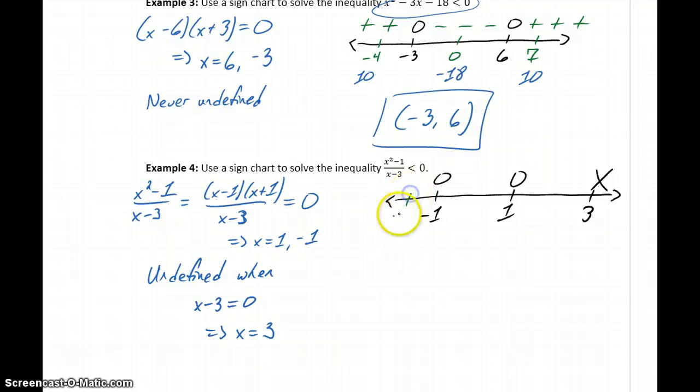So we could, again, choose some test points as long as there are any values in between those intervals. If we plug negative 2 into our function, we'll get a negative result. So from negative infinity to negative 1, our function is negative. If we plug in 0, we would get a positive result. If we plug in 2 to our function, we would get a negative result. And plugging in 4 would give us a positive result.